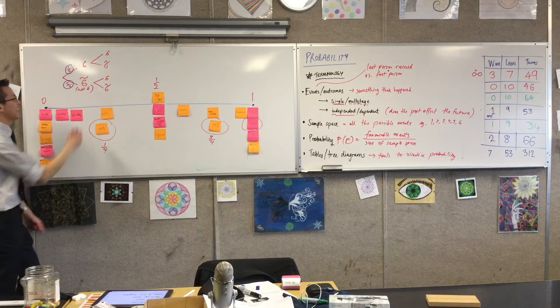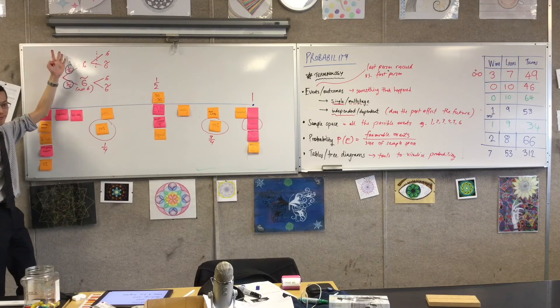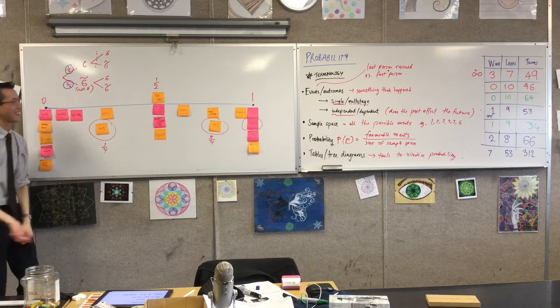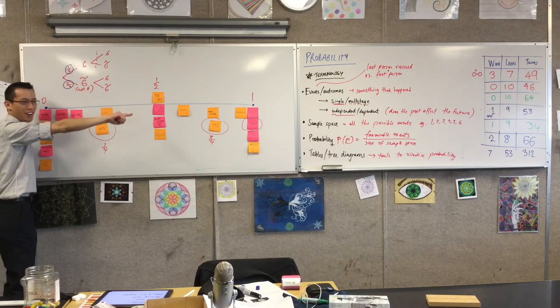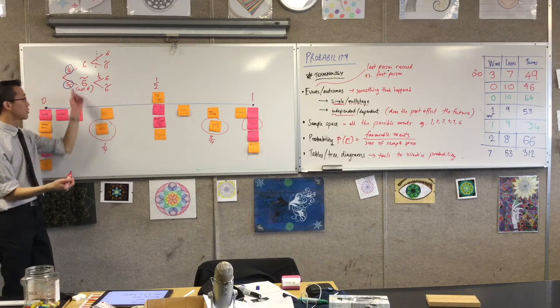It's worth pointing out in this example, this actually wouldn't exist, this one here, because what happens when you roll the six? You're dead, so the game is over. So really this branch would just keep on going down this way.